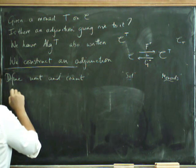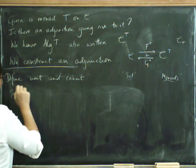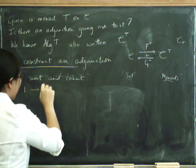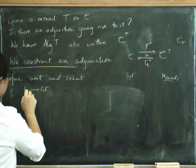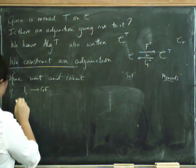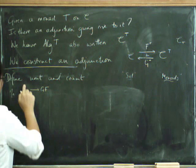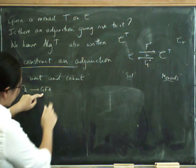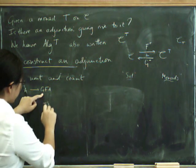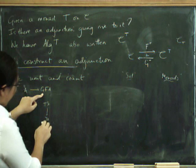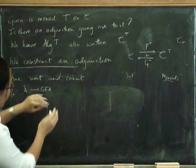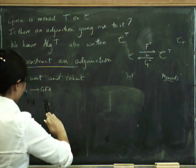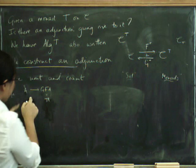So, we now need to define a unit and counit. The unit eta has to go from 1 to GF. Let's think about this carefully. This is 1 on C and it's going to GF. So we've got to have, on components, something from A to GF of A. Now what's GF of A? F of A is this mu thing, right? And then to forget, G is the forgetful thing where we forget down to the underlying object. So that's just TA.